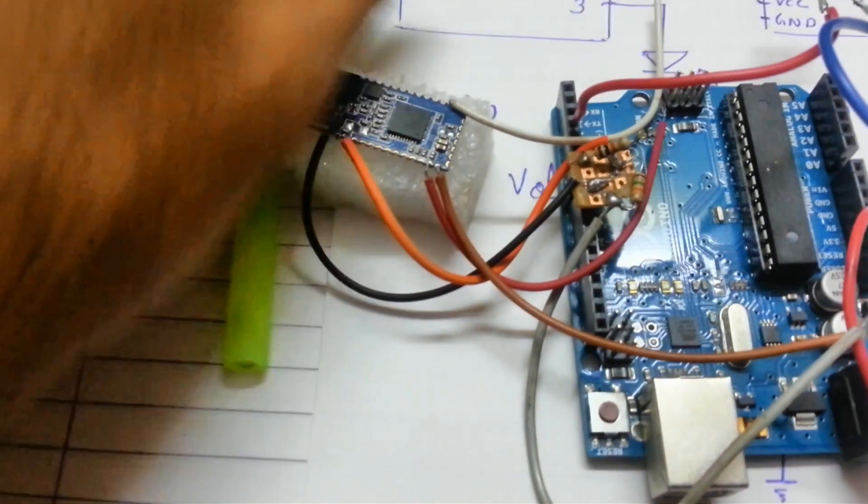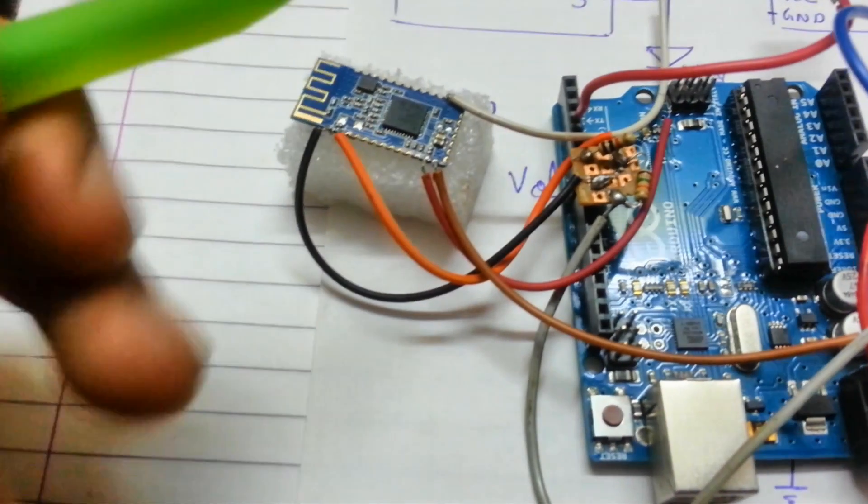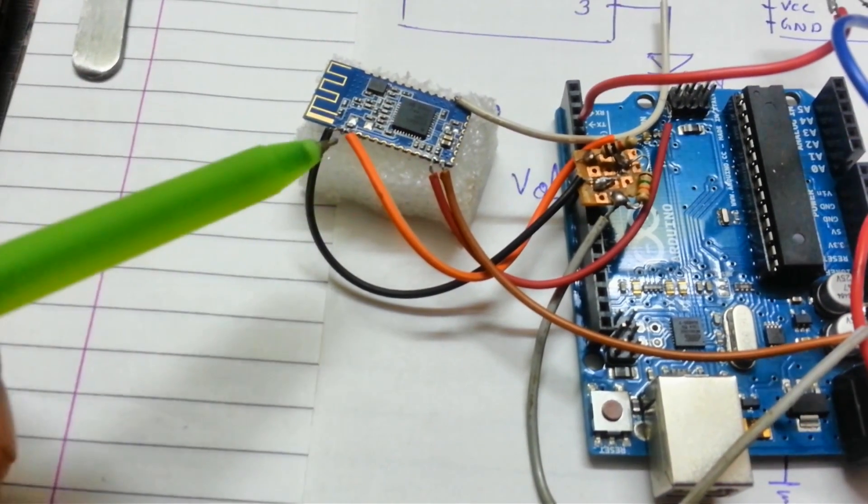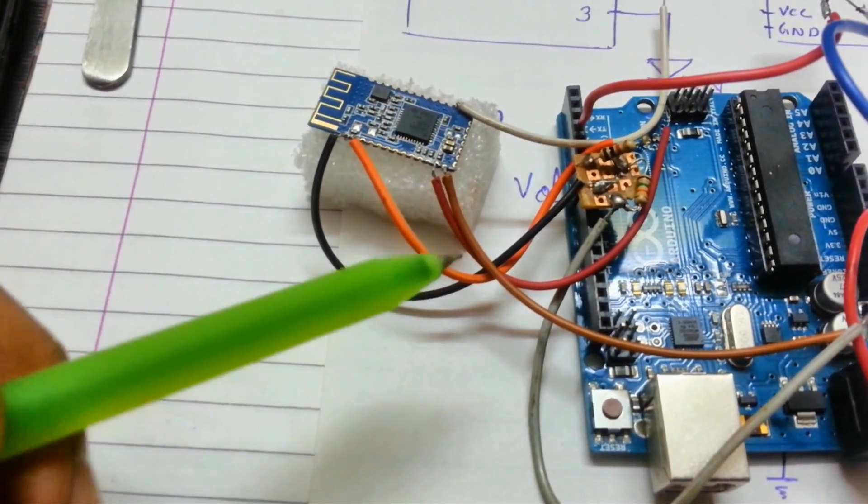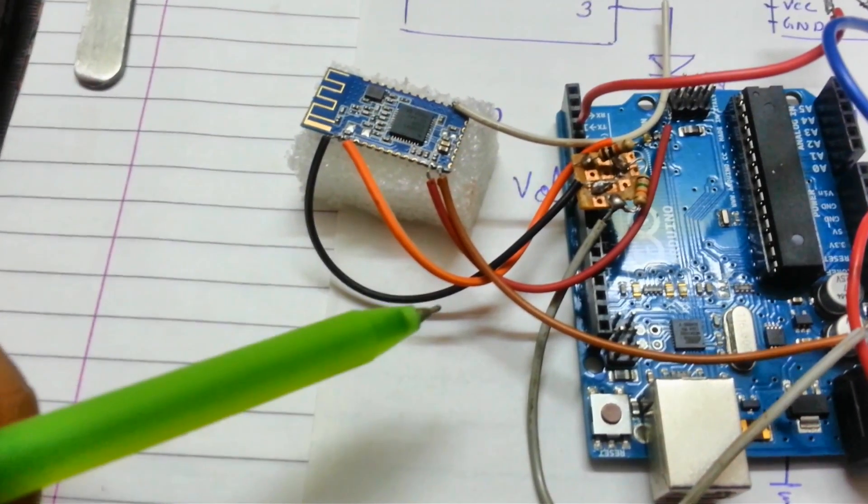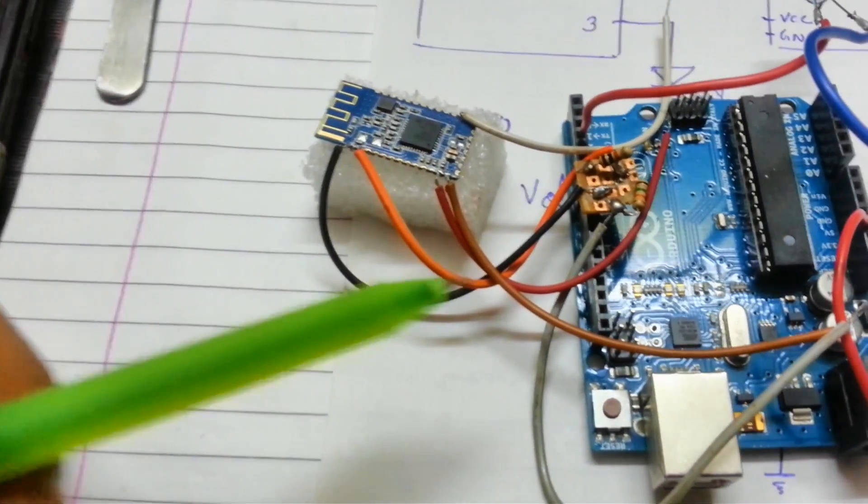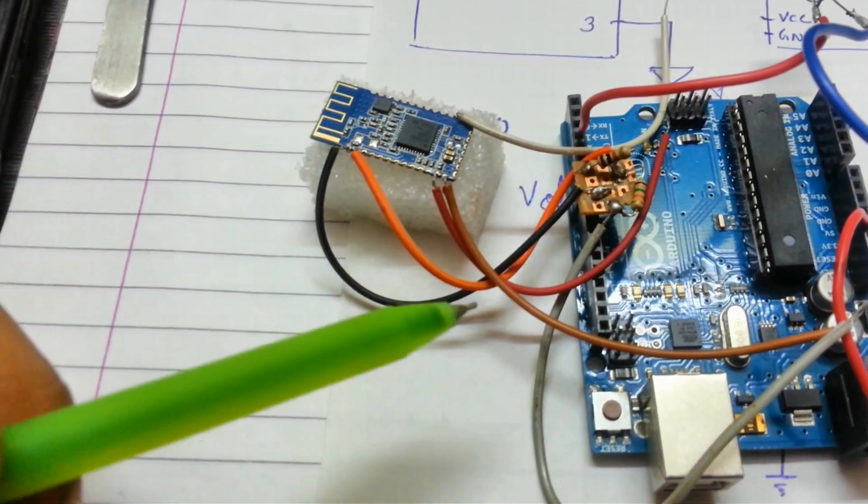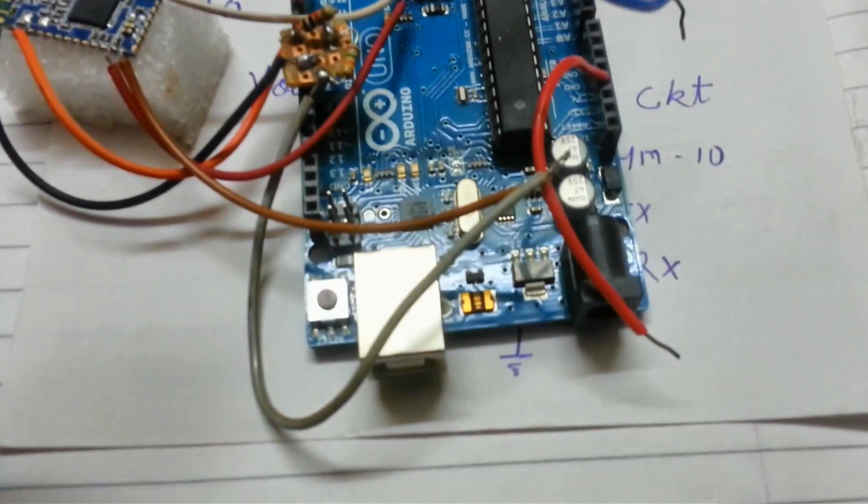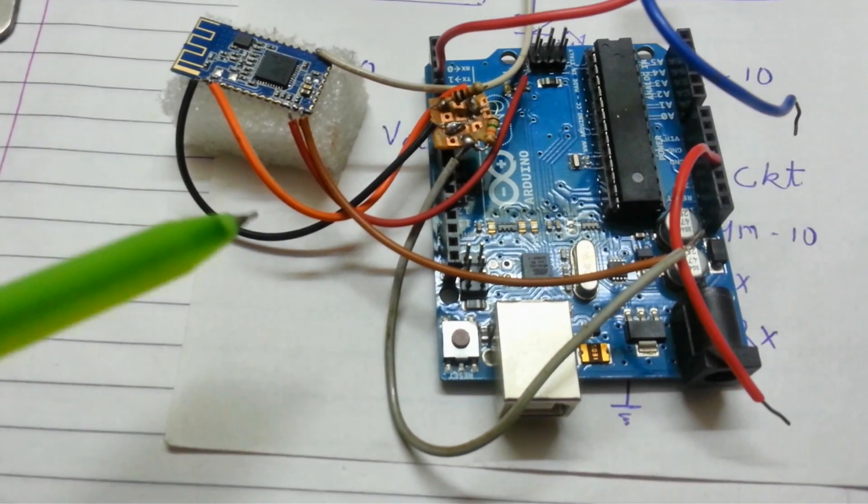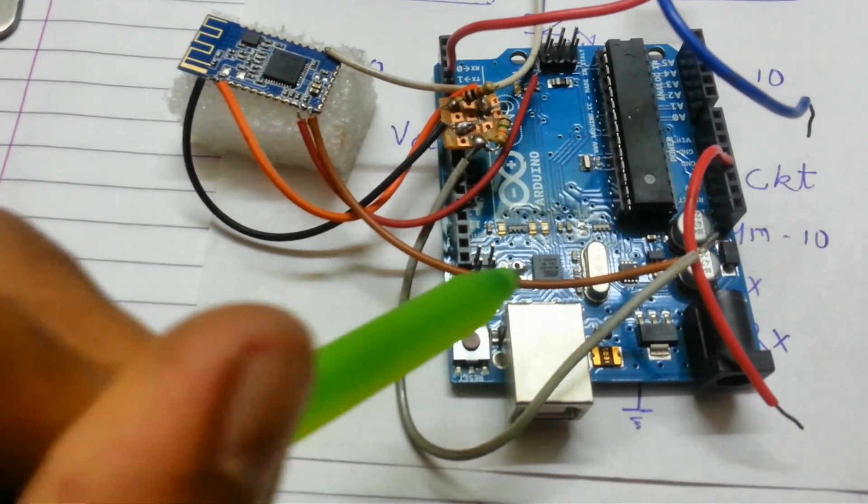This is the HM-10 module with my black line as my TX, my orange as my RX, my red line as my VCC, and my brown line as my ground.